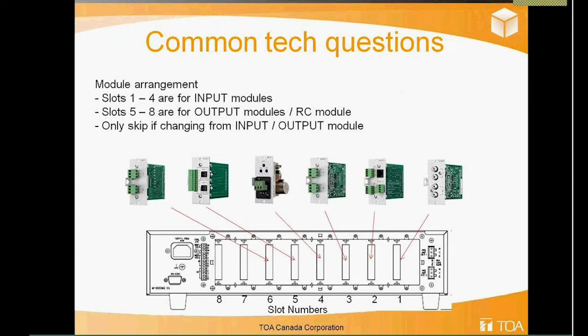Slots five to eight are for output or RC and control modules. Line them up in sequence — if you have two D modules, put them in slots one and two, skip slots three and four since those are assigned for inputs, and start your output side at slot five. Never skip a slot within the input section; if you skip a slot you'll always get an error message on the front panel and the machine won't let you past the module error code.